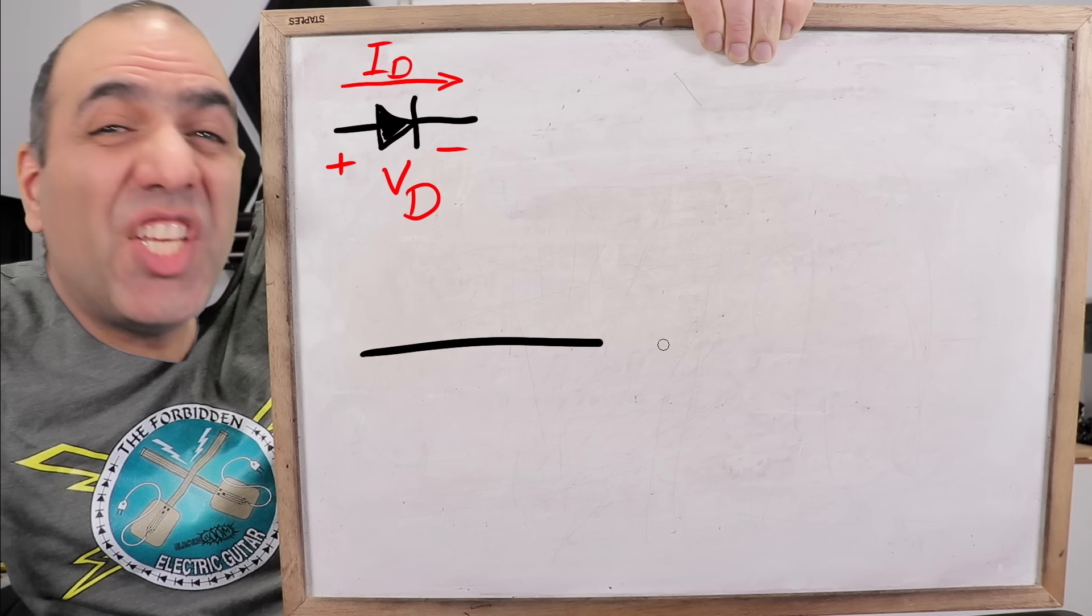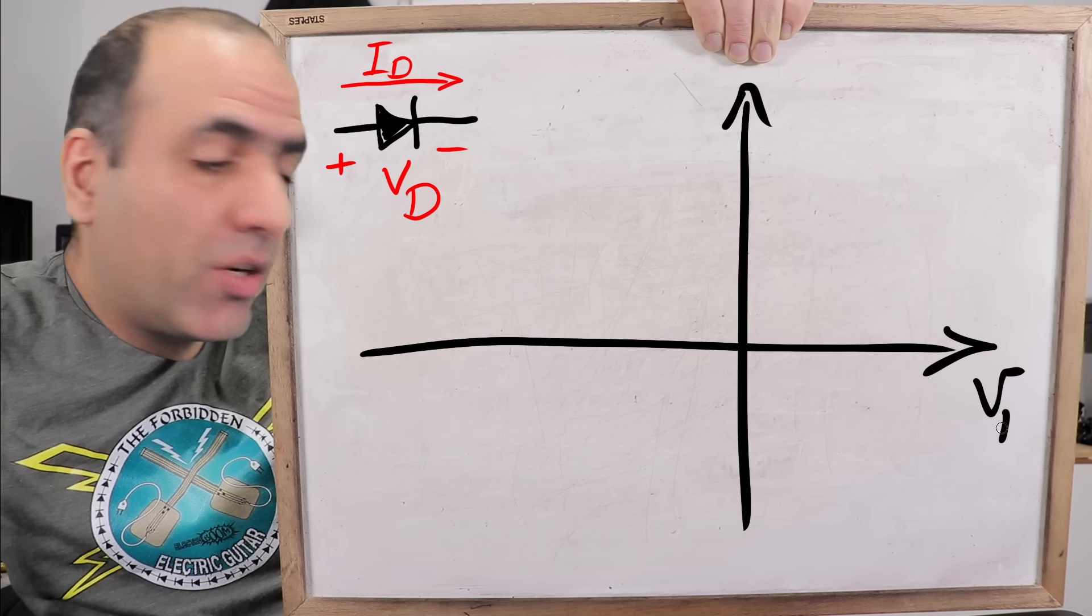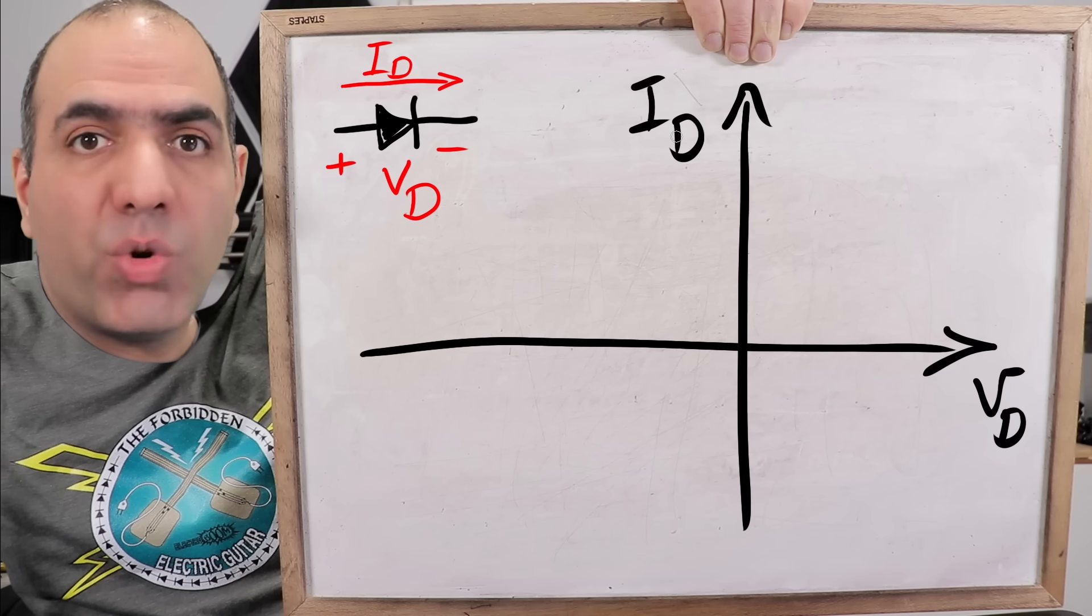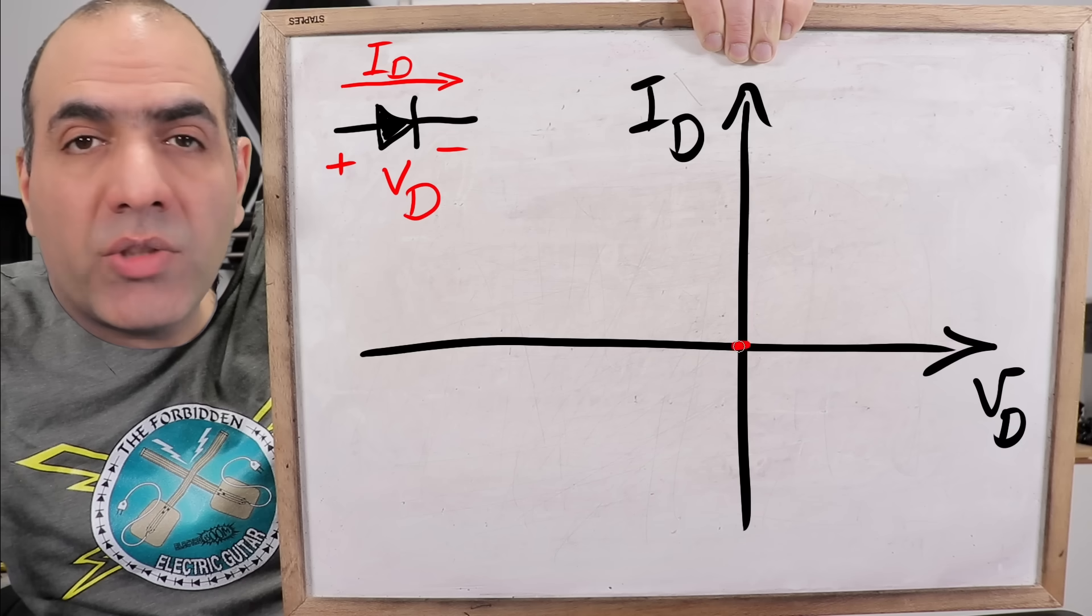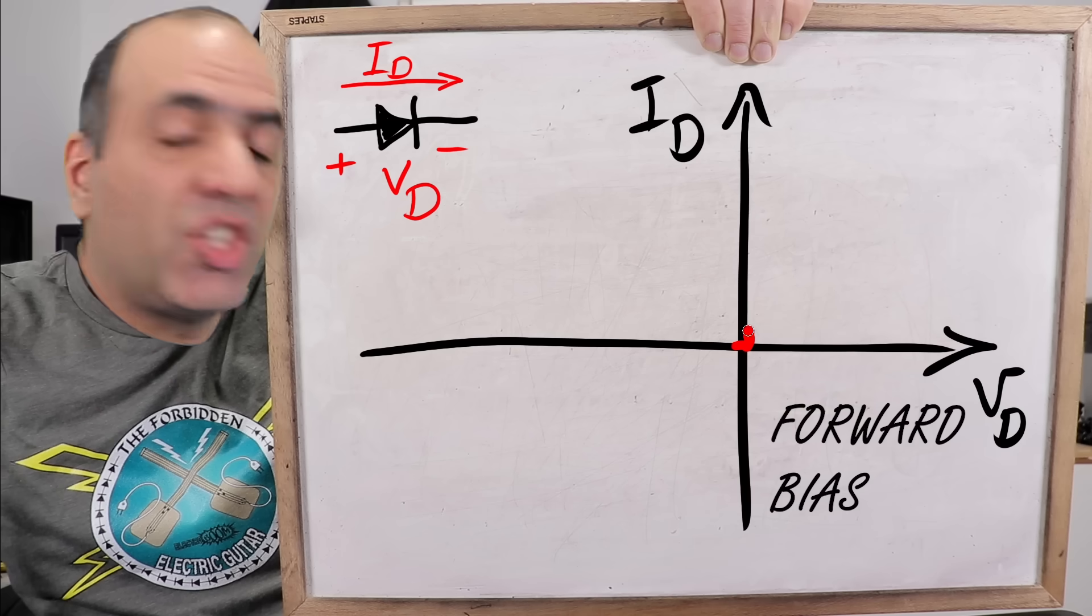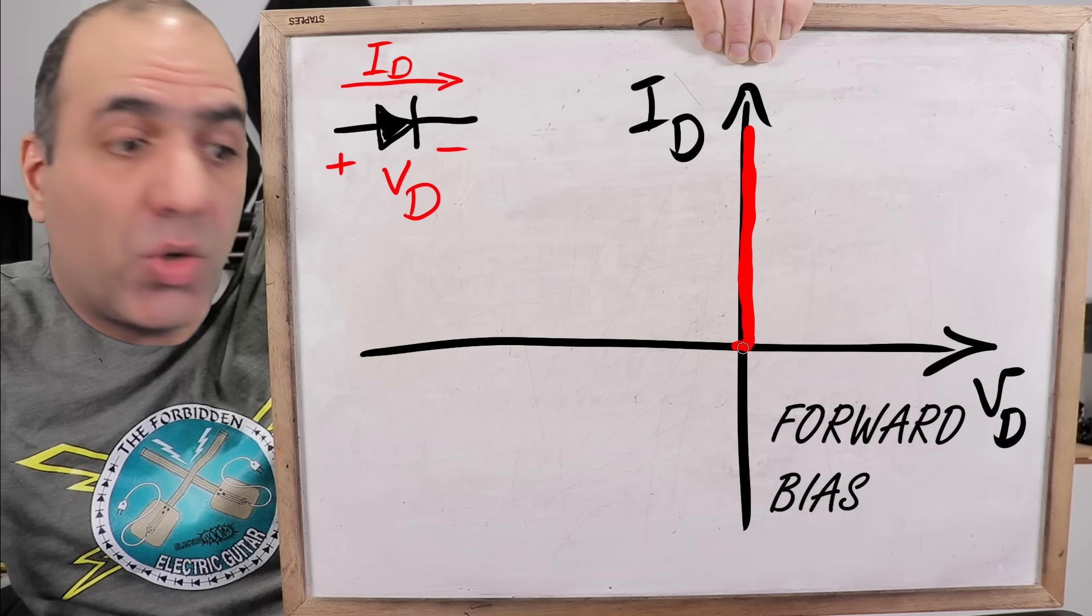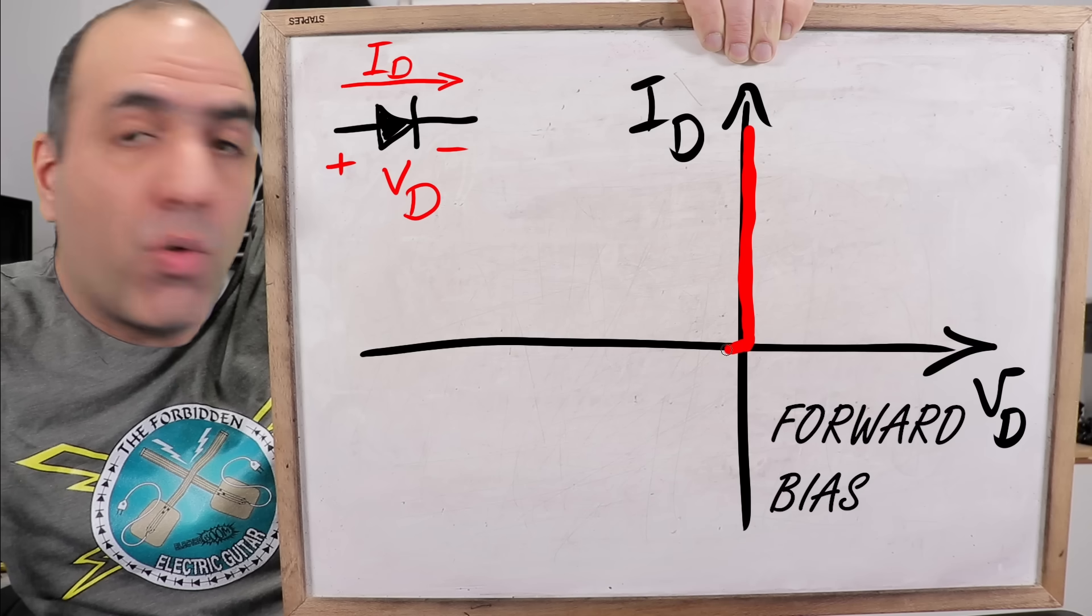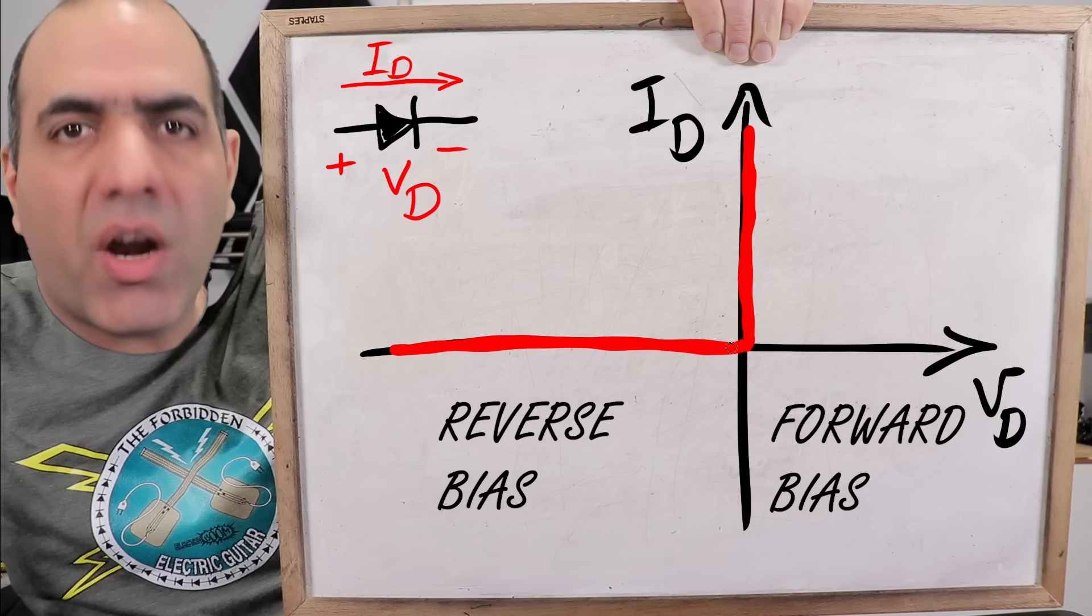Now, let me show you the ideal behavior of a diode. X-axis is the voltage across the diode and Y is the current through it. If the voltage across it tries to get positive or the diode is forward biased, it turns on like a switch and lets through any amount of current, like a short circuit. But if the voltage is negative or the diode is reversed biased, it blocks and there is zero current.